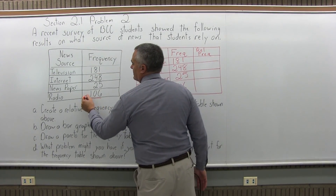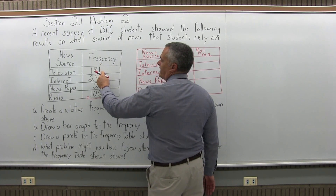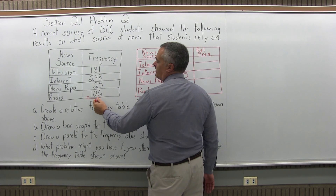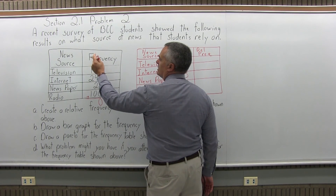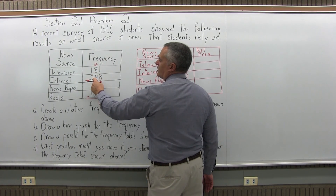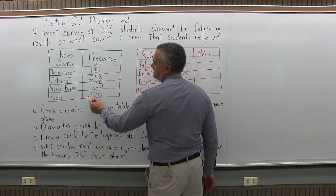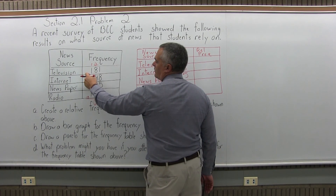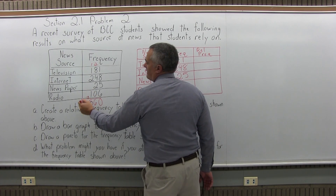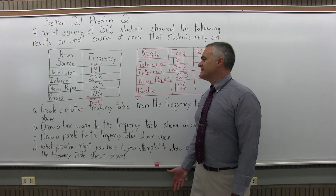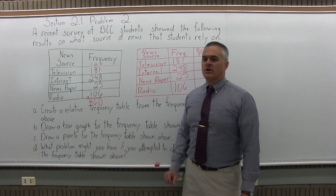I need to know the total of all the frequencies, which I can add up. You could certainly use a calculator — these numbers aren't too bad. 1 and 8 is 9, 9 and 5 is 14, 14 and 6 more would be 20. Then 2 plus 8 is 10, 10 plus 4 is 14, 14 plus 2 is 16. Then 1 and 1 is 2, 2 and 2 is 4, 4 plus 1 more is 5. So if I've done my math correctly, there are a total of 560 in the frequency column.